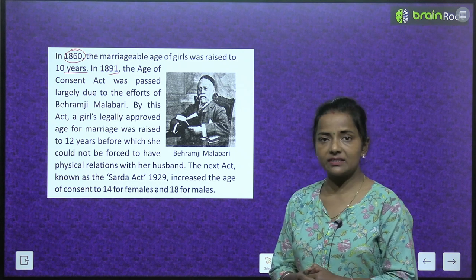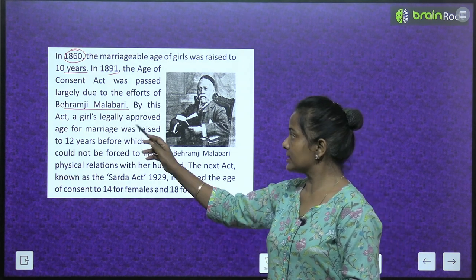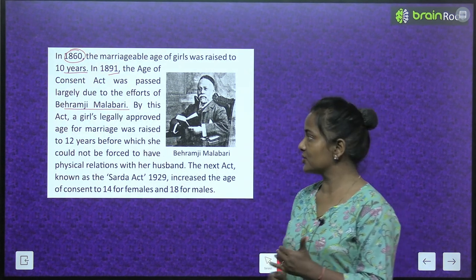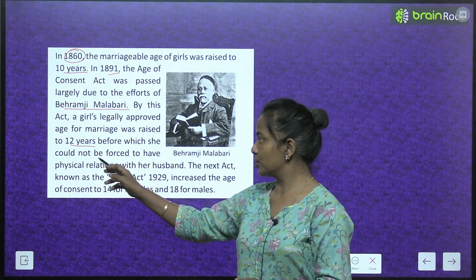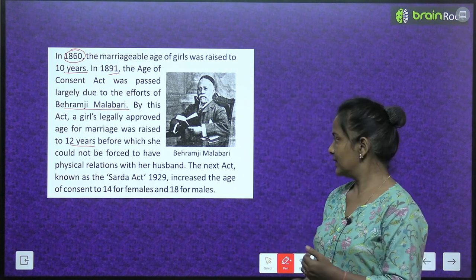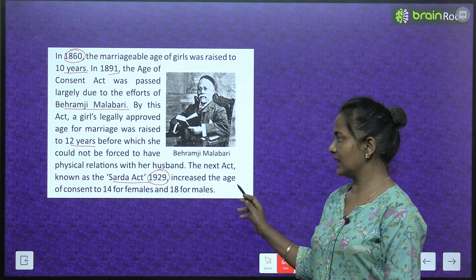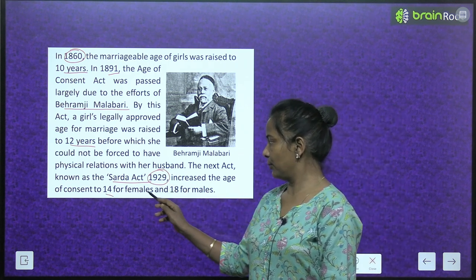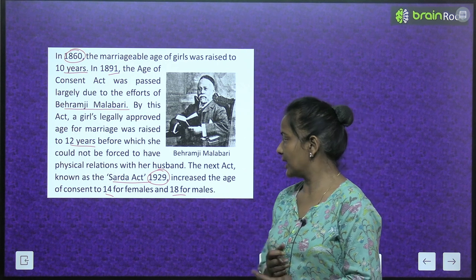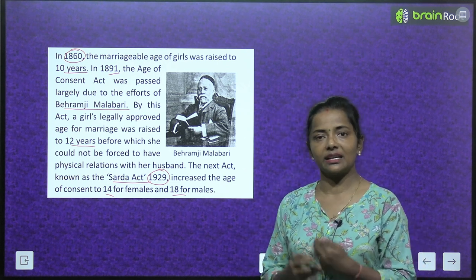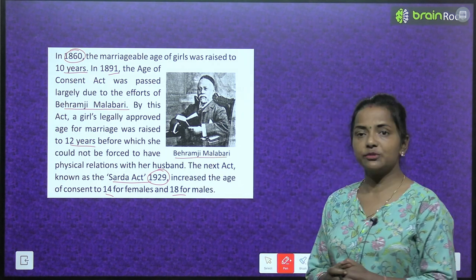In 1891, the Age of Consent Act was passed largely due to the efforts of Behramji Malabari. By this act, a girl's legally approved age of marriage was raised to 12 years, before which she could not be forced to have physical relations with her husband. The next act, known as the Sharda Act 1929, increased the age of consent to 14 for females and 18 for males.